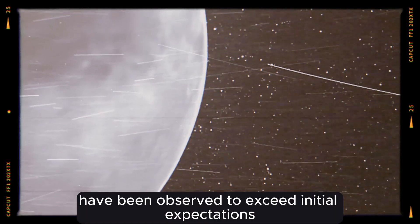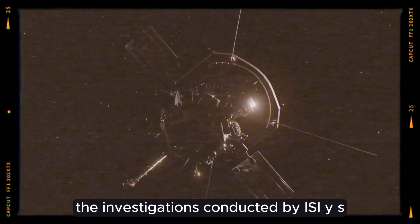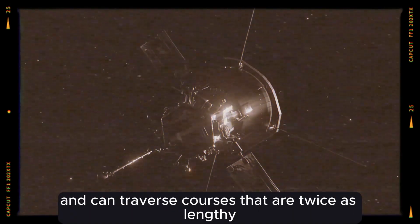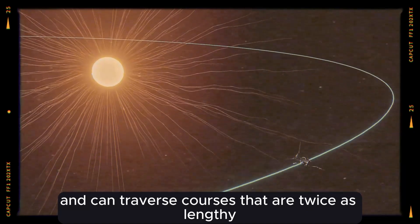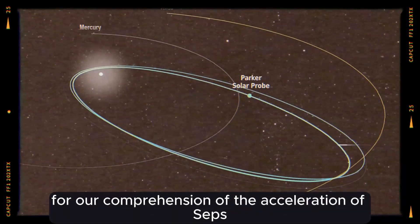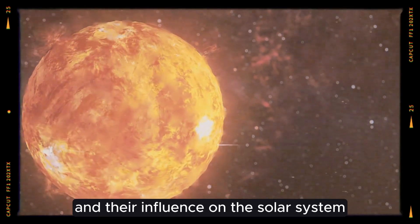have been observed to exceed initial expectations. The investigations conducted by ISIYS revealed that SEPs can be perturbed by switchbacks and can traverse courses that are twice as lengthy as originally anticipated. These findings have important consequences for our comprehension of the acceleration of SEPs and their influence on the solar system.